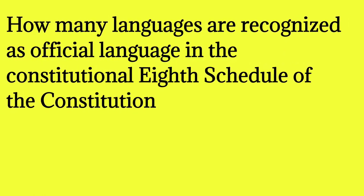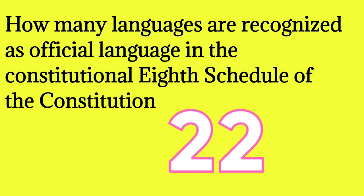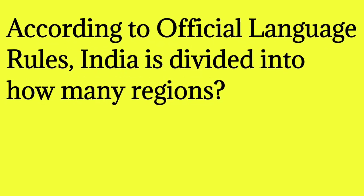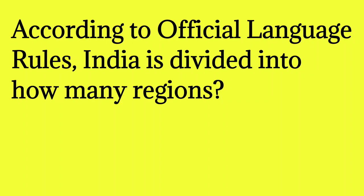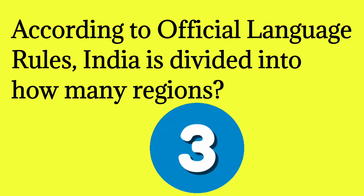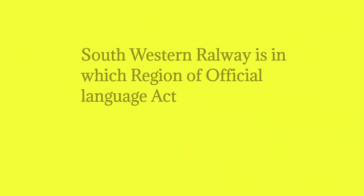How many languages are recognized as official languages in the 8th Schedule of the Constitution? Currently 22 languages are recognized. According to official language rules, India is divided into three regions: A, B, and C.